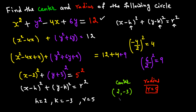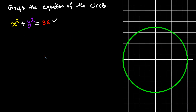That's how you find the center and radius when given an equation — use the completing the square technique to convert the equation to standard form. Now for the third example, we need to graph the circle.